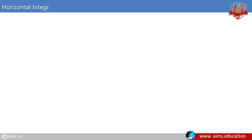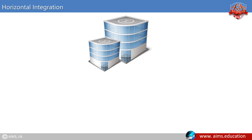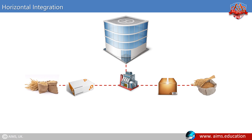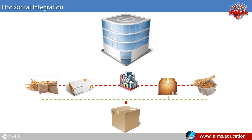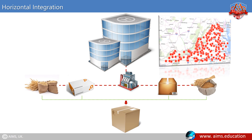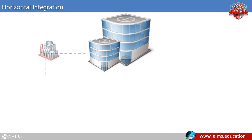Horizontal integration is the expanding of a business by acquiring a similar company in the same industry. It is contrasted with vertical integration, where a company produces different items related to one product. A company may do this via internal expansion, acquisition, or merger. The process can lead to monopoly if a company captures the vast majority of the market. For example, a company that manufactures shampoo may add other brands to appeal to a wider customer base.